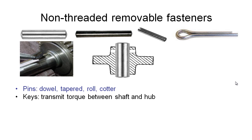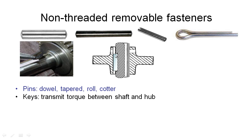Keys are another way of transmitting torque between shafts and hubs. A Woodruff key has a semicircular shape that fits into a matching semicircular slot — these come in particular sizes that match the shape of the cutting tool used to make the slot, so they're numbered. We can also have parallel keys: a rectangular section of steel inserted into a matching slot in both the shaft and the hub, enabling the transmission of torque.